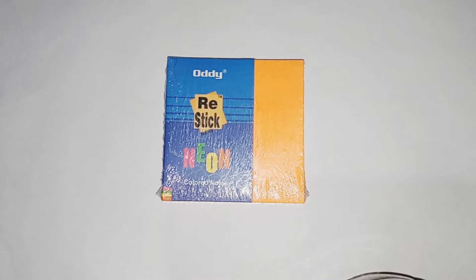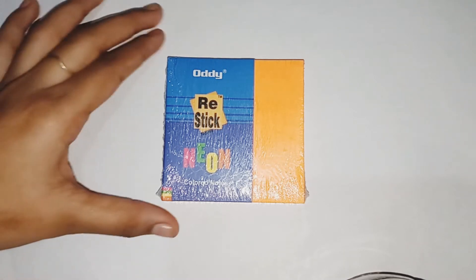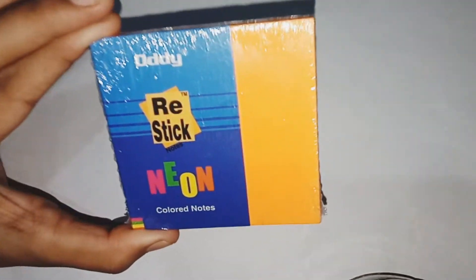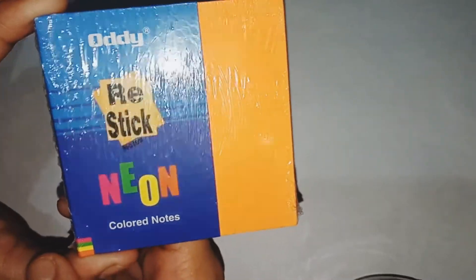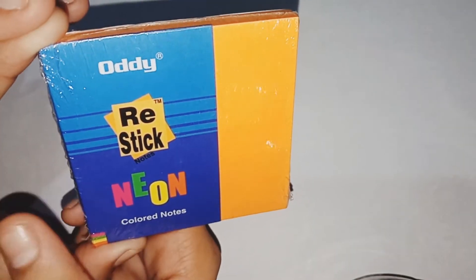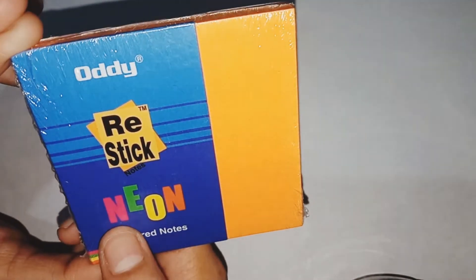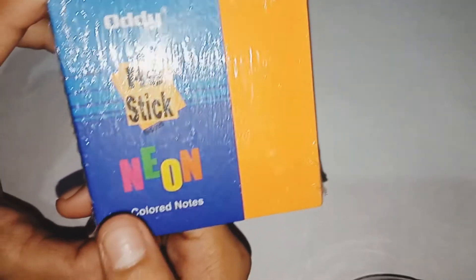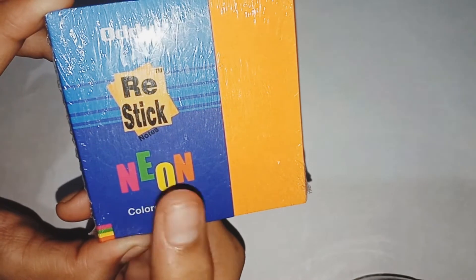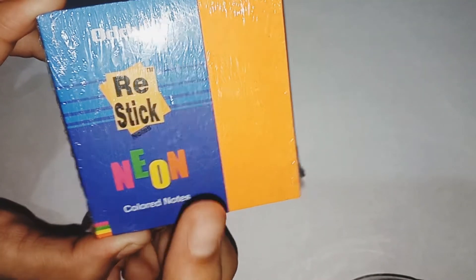Hello everyone, welcome to Begin Now. Today I'm going to share a quick review on OD Re-Stick neon colored notes. I bought this from a stationery shop near my house because they seemed adorable and affordable. They're called Re-Stick from the brand OD, and come in four different colors: pink, green, yellow, and orange. I bought the orange one.